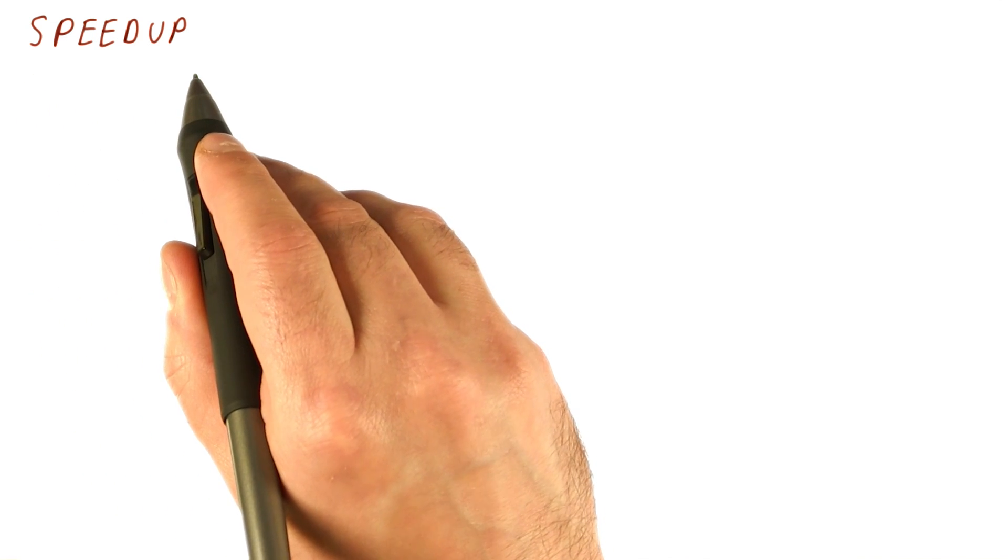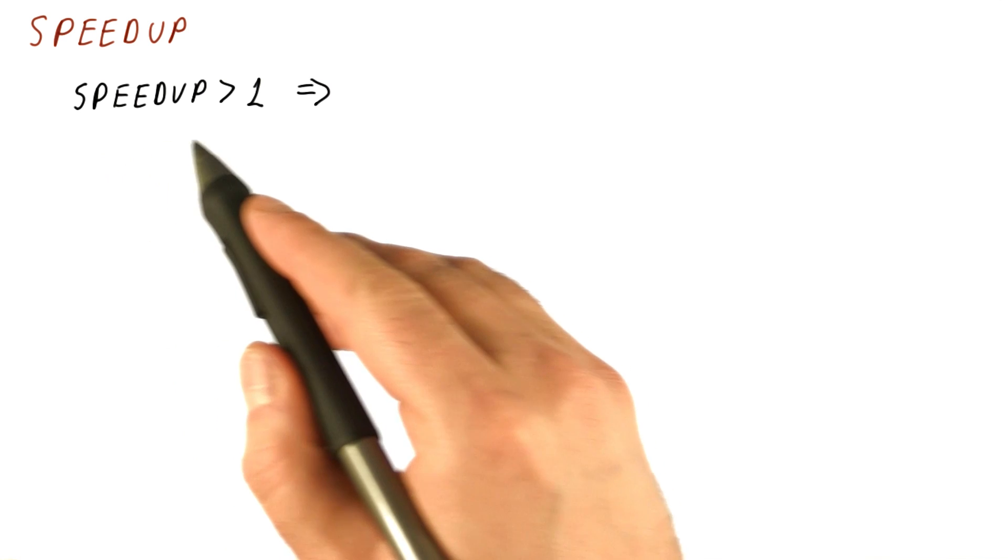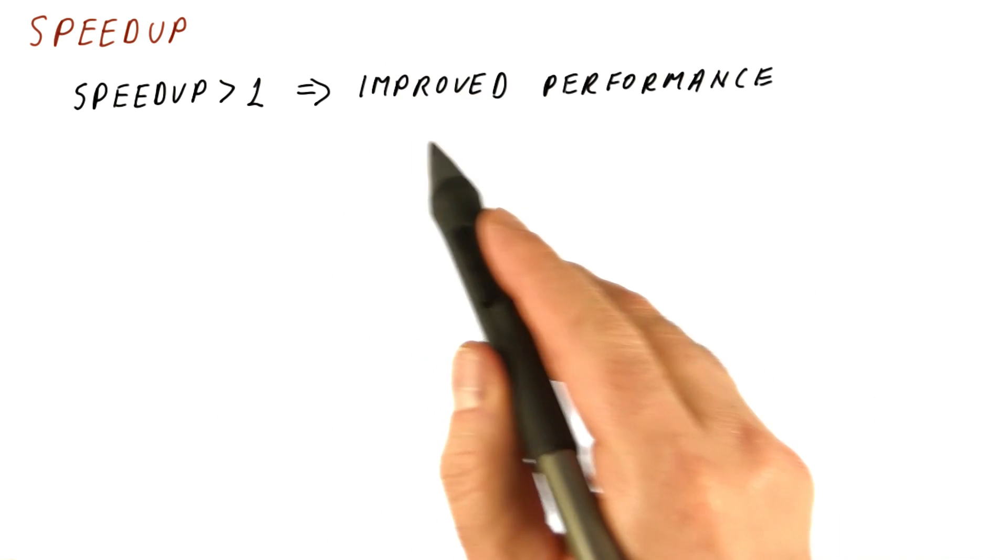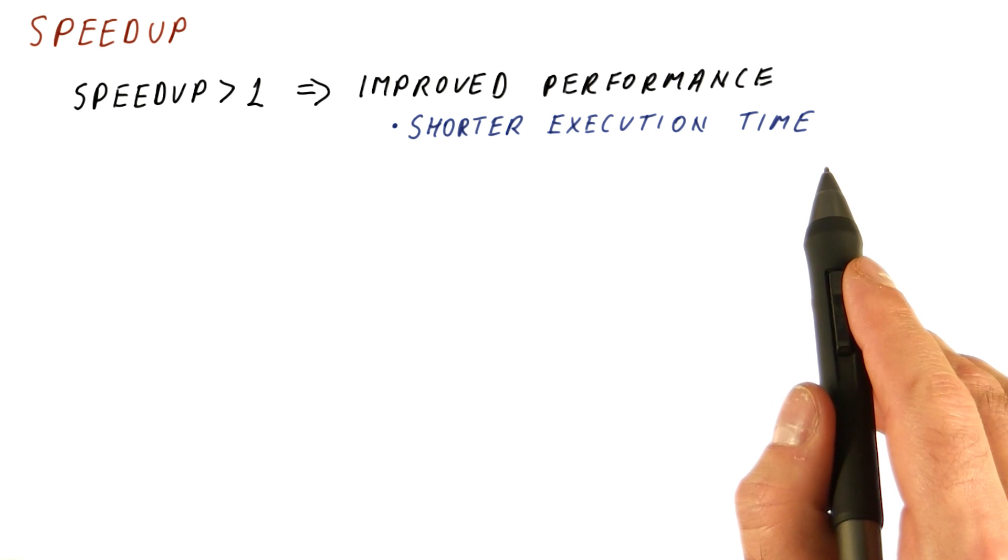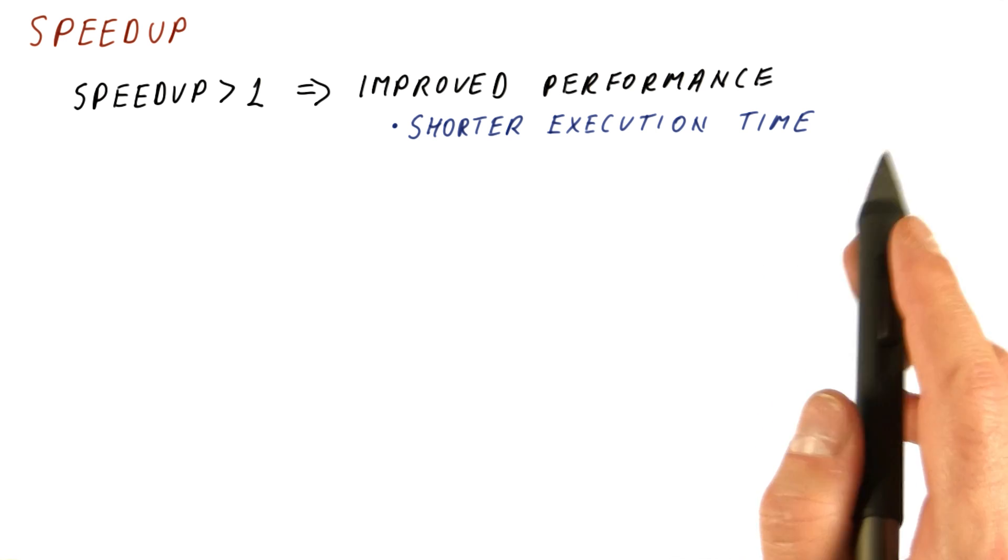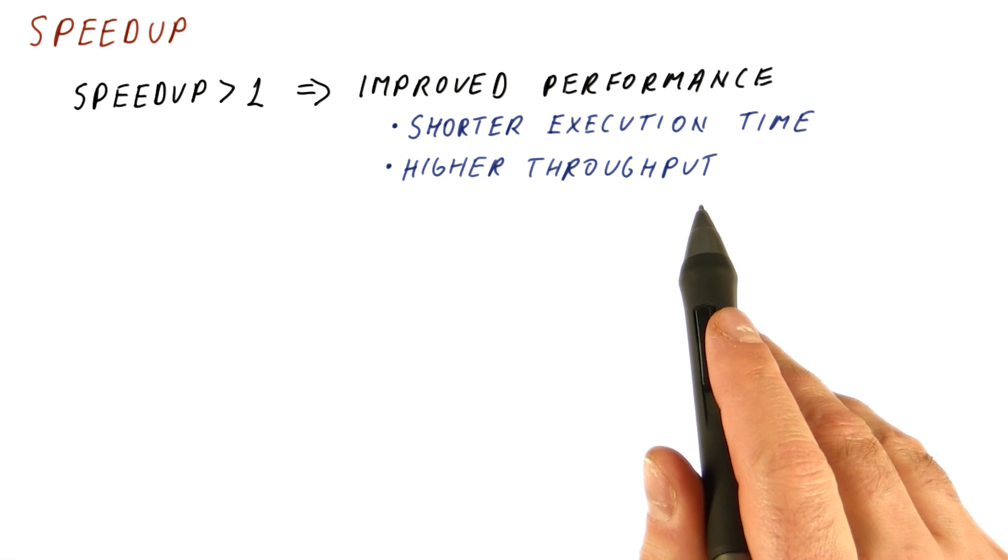So let's discuss the speedup numbers we can get. We have already seen in the previous quizzes that a speedup larger than one means improved performance, either through shorter execution time—it takes less to compute something than before—or higher throughput. We can do more of something per second than before.